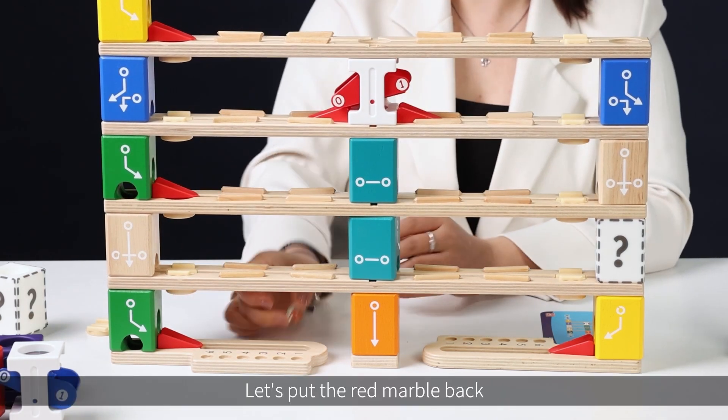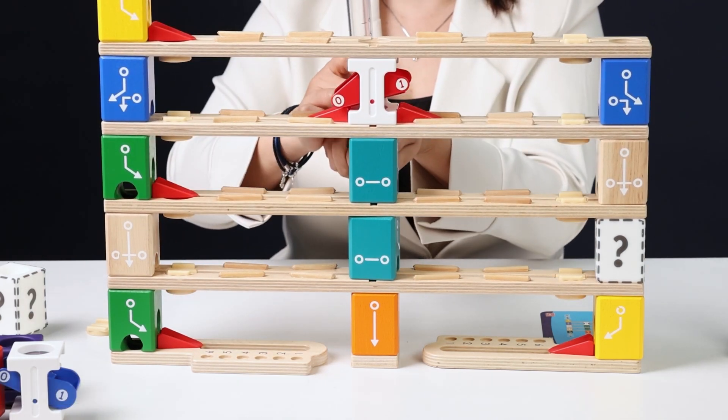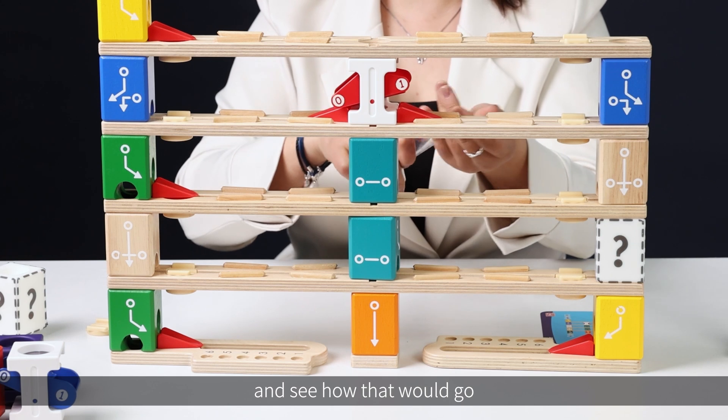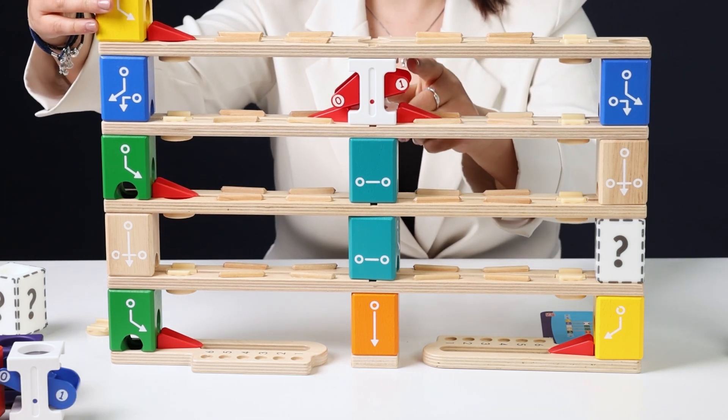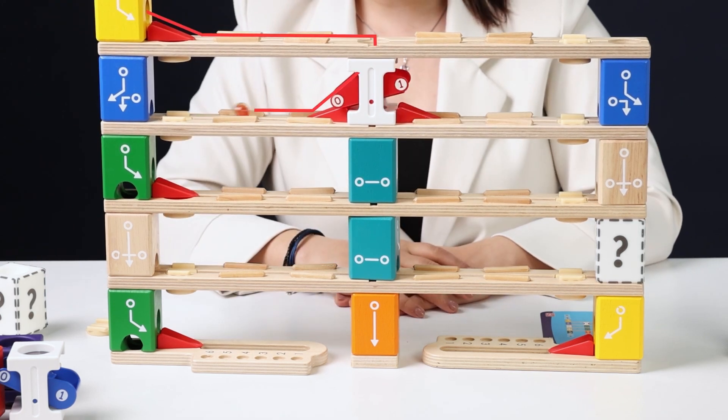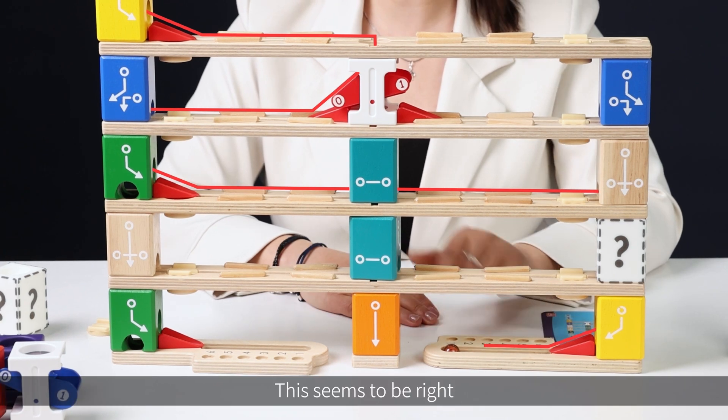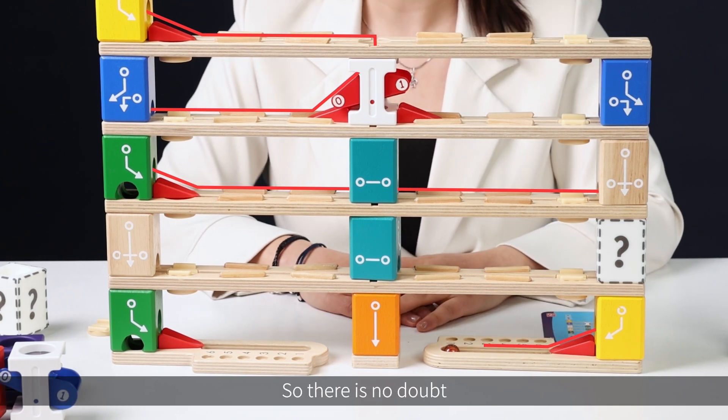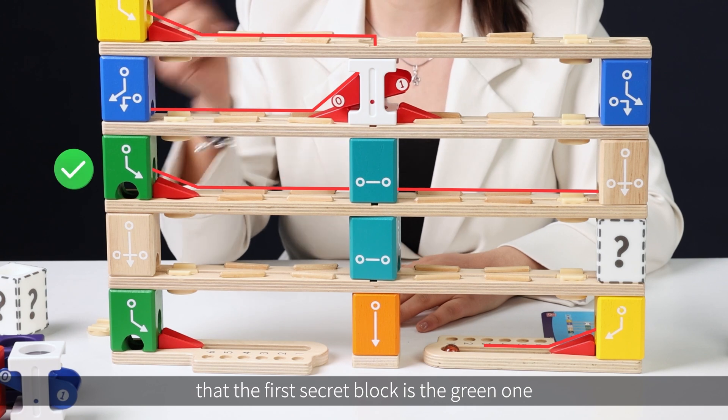Let's put the red marble back and see how that will go. This seems to be right. So, there is no doubt that the first secret block is the green one.